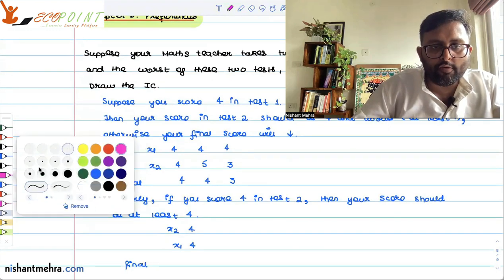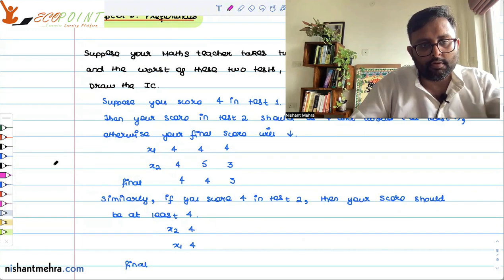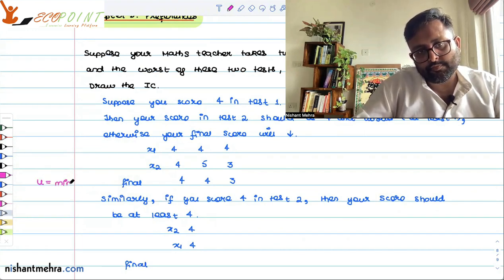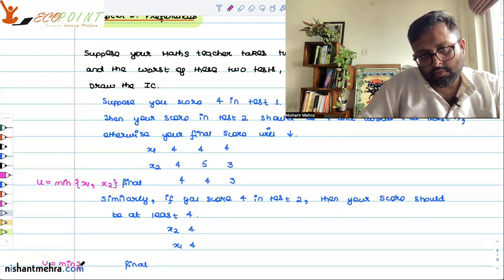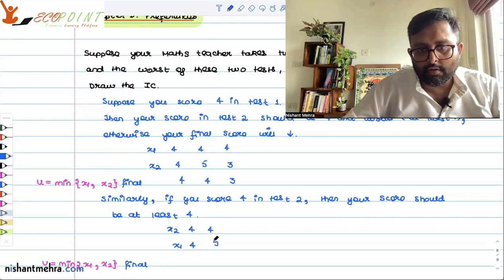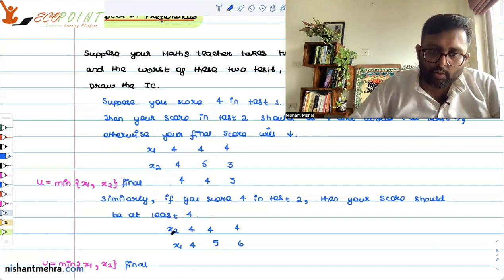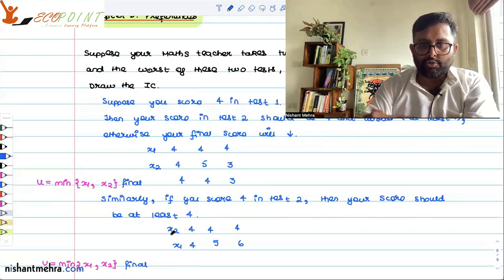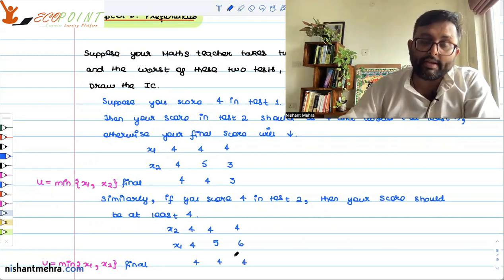The final score is u = min(x1, x2). If you score 4 in test 2, your score in test 1 should be better. This professor wants you to perform better in every paper.